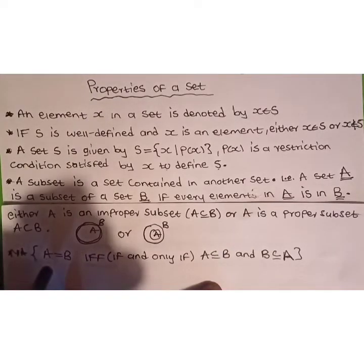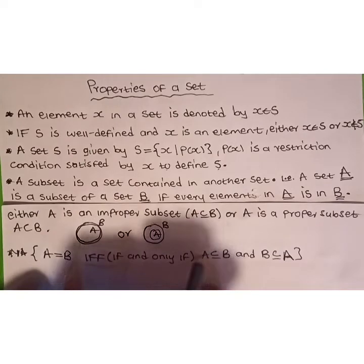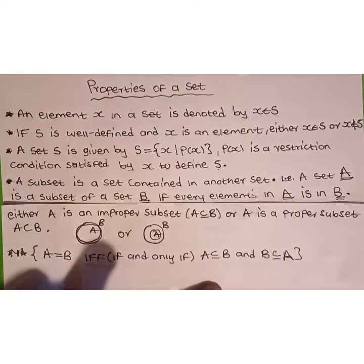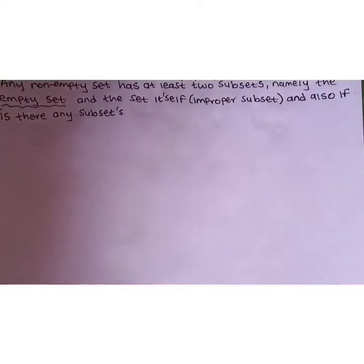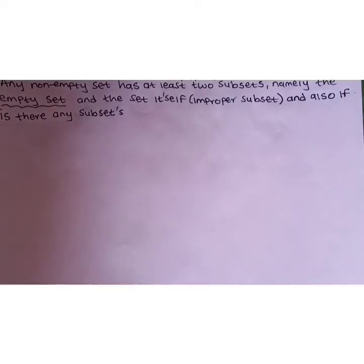Note that a set A will be equal to B if and only if A is an improper subset of B and B is an improper subset of A. Any non-empty set has at least two subsets, namely the empty set and the set itself, which is an improper subset. And any other subset will be proper.